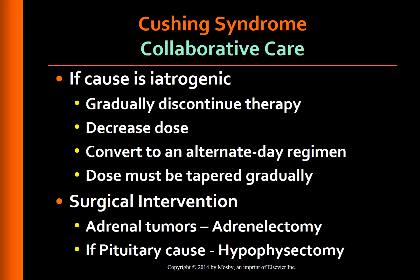Surgical intervention is performed when Cushing syndrome is due to adrenal or pituitary tumors. Adrenalectomy, either unilateral or bilateral, and hypophysectomy for pituitary tumors, is usually done.